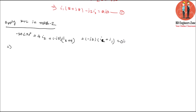Mesh 2 equation terms: 4·i2 plus minus j2·i2 plus minus j10 plus j10 plus minus j2·i2 minus j2·i1 equals 20 at 90 degrees.